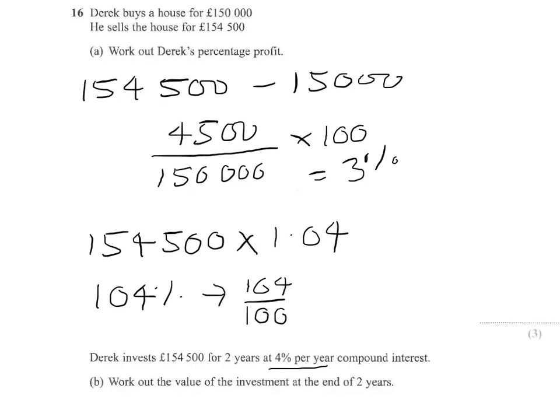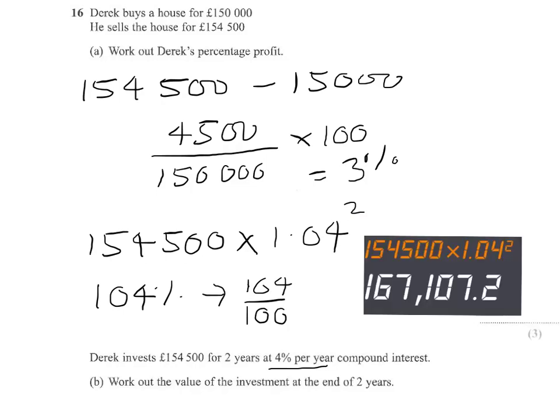The extra bit of the question is that it's going in for two years — two years compound interest. So you need to do 1.04 times 1.04, or 1.04 to the power of 2. What we need to do then is put 154,500 times 1.04 squared into the calculator to work out the value of the investment at the end of two years. You can see the calculator display on the screen, and the answer is £167,107.20, and that's your answer.